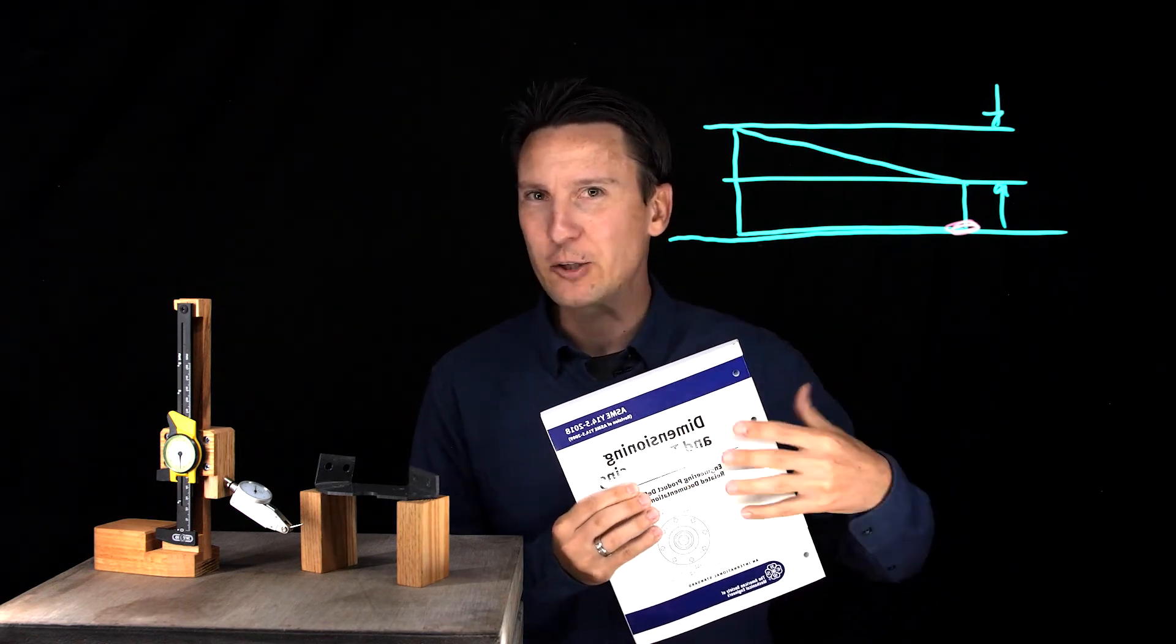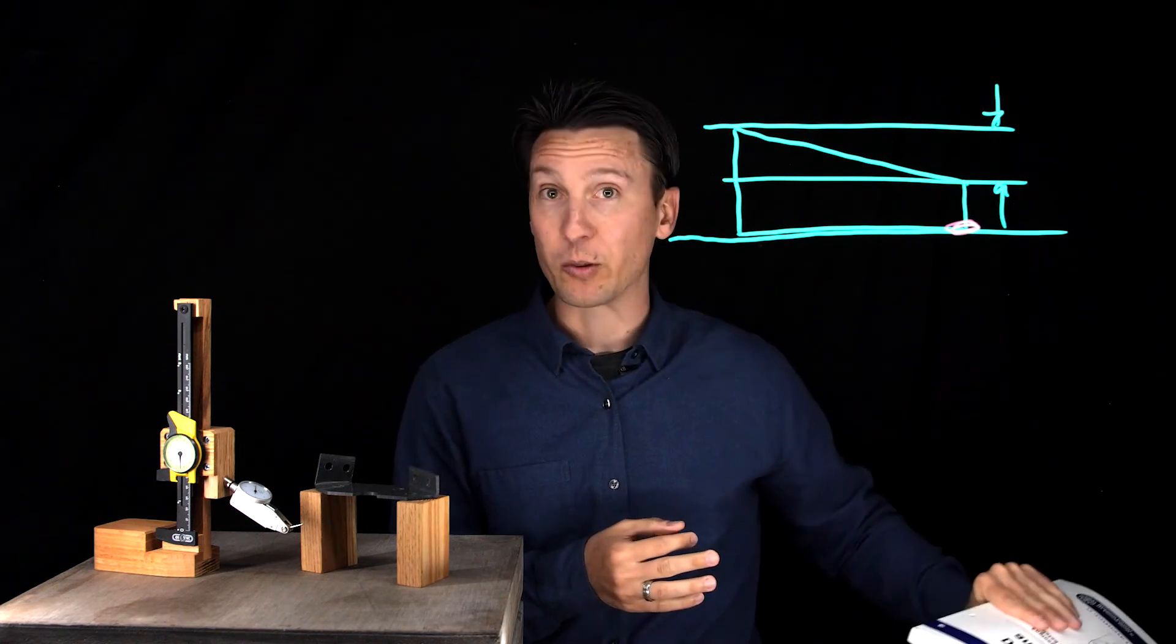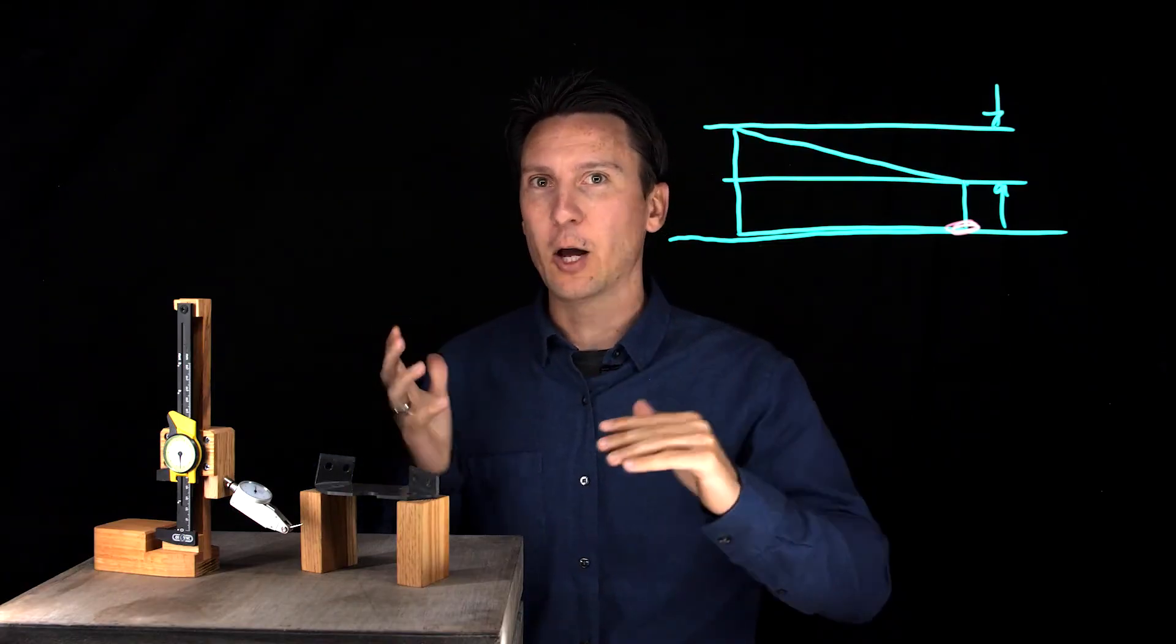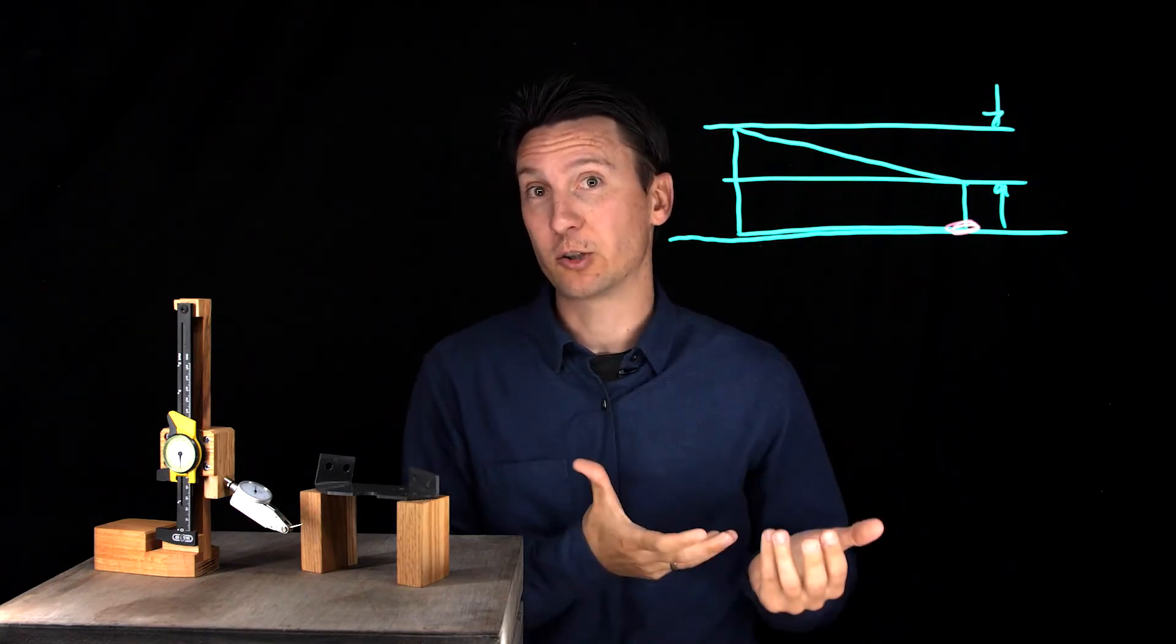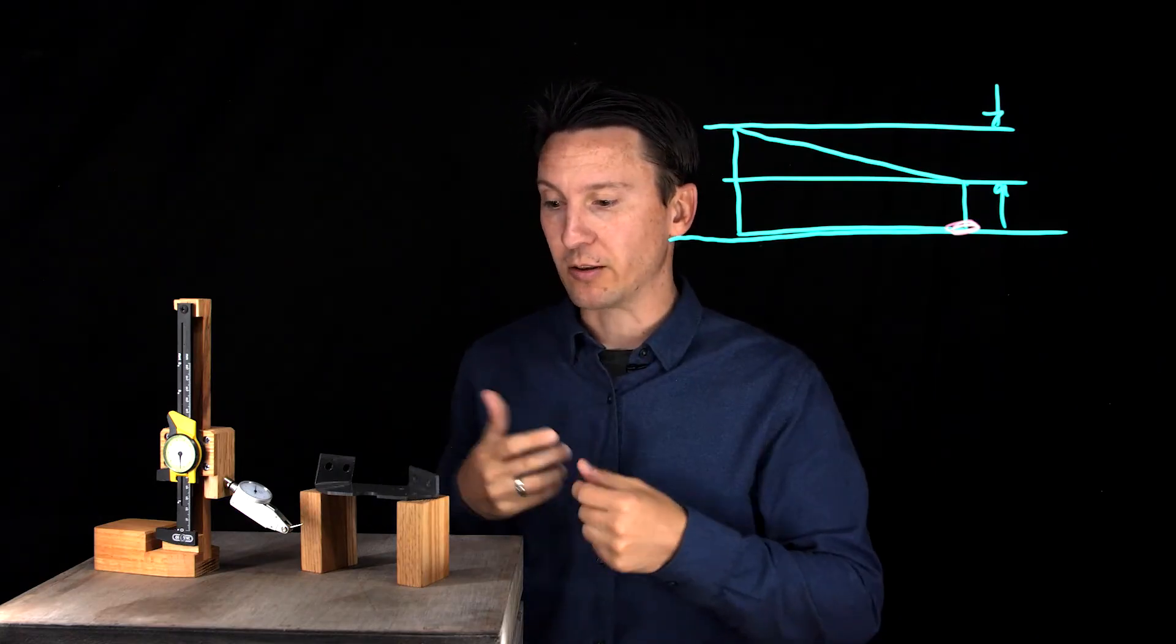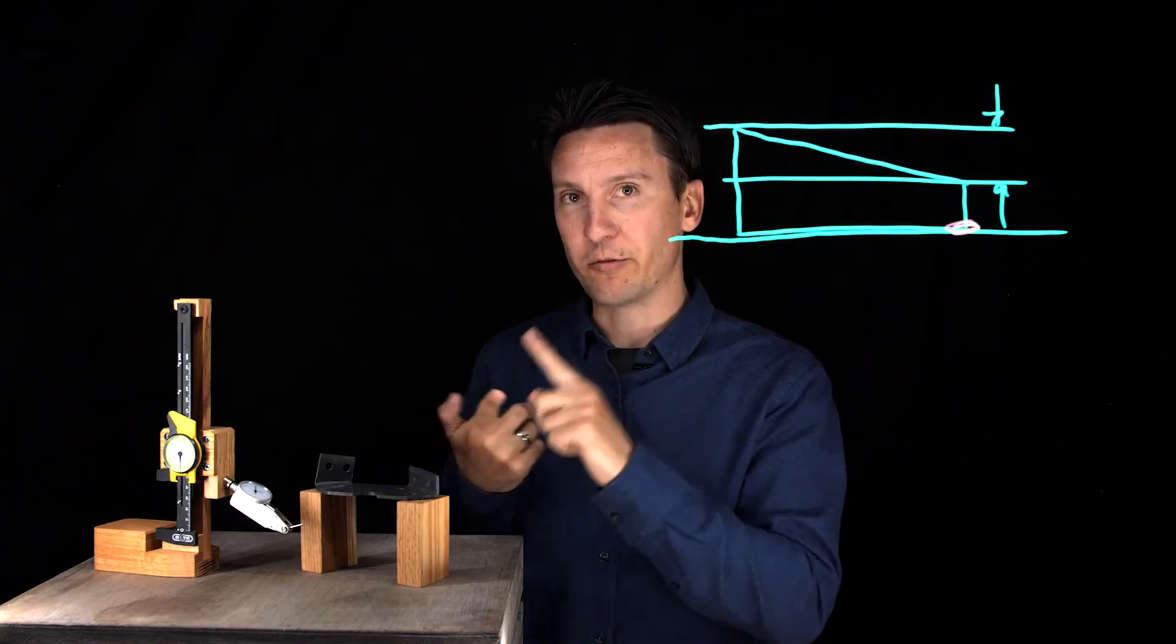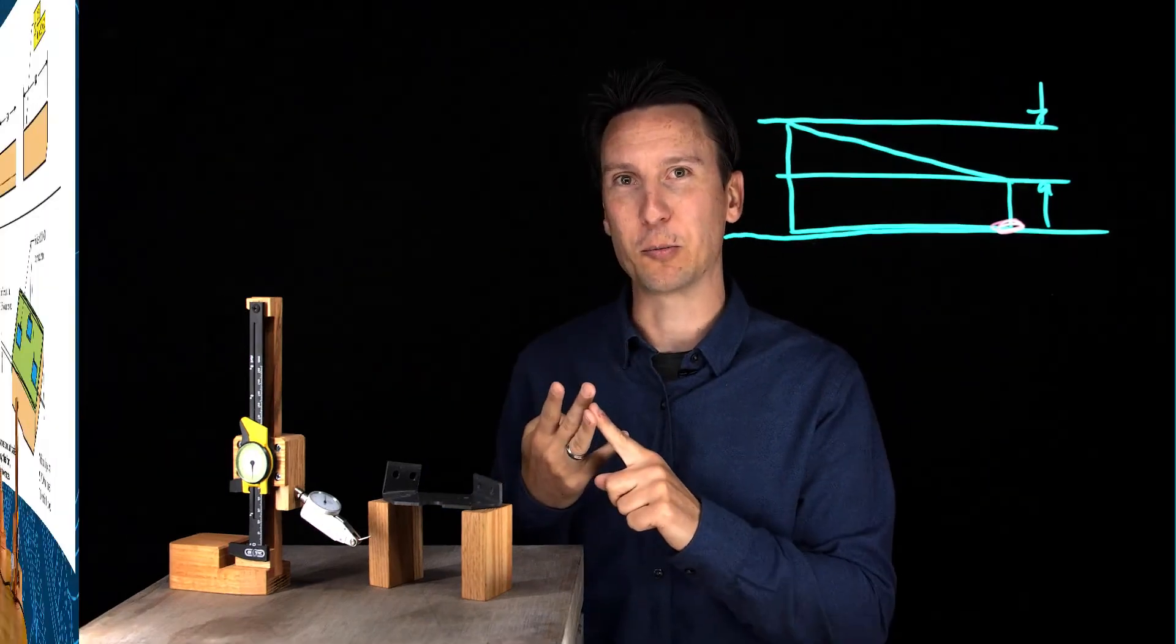And that's really why the standard likes to stay away from inspection. They don't tell you how to measure anything in the standard, they tell you what the tolerance zone is, two parallel planes. Now how are you going to measure that? Well that's just a whole different side of engineering that we call quality engineering, and that's where we put the experts in there to look at what the specification is, the theory behind it, and then come up with a fast, accurate, and cheap way to measure parts.